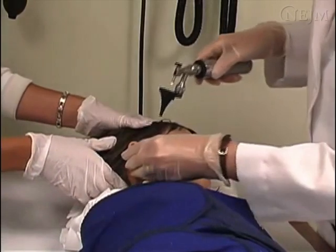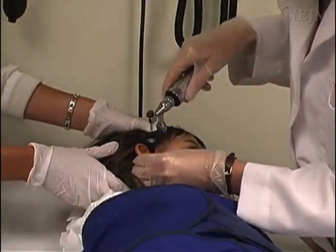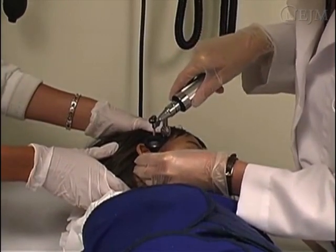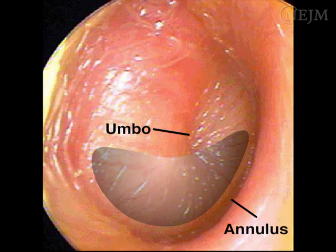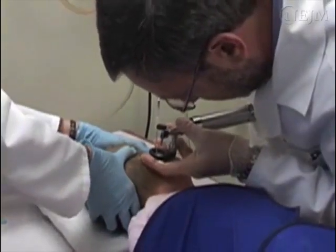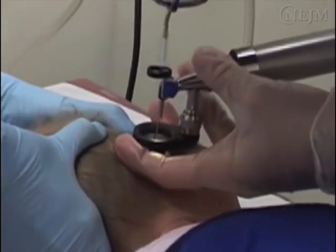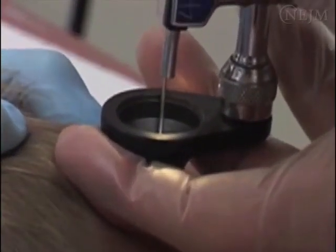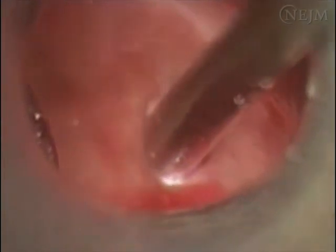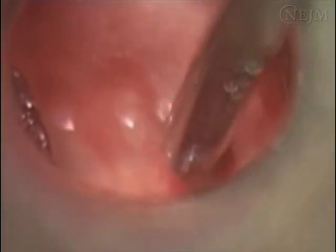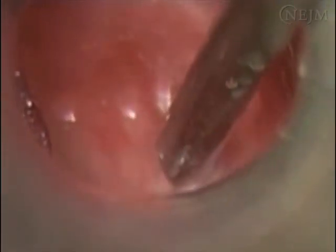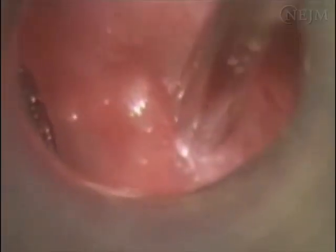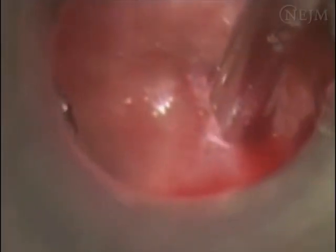The steps of the procedure are as follows. Insert the otoscope into the external auditory canal using your dominant hand and visualize the umbo and the annulus. Once the instrument is in the proper position, use your non-dominant hand to hold the otoscope in place. Insert the needle attached to the tympanocentesis aspirator, which is in turn attached to the suction device. Penetrate the inferior part of the tympanic membrane with the needle.